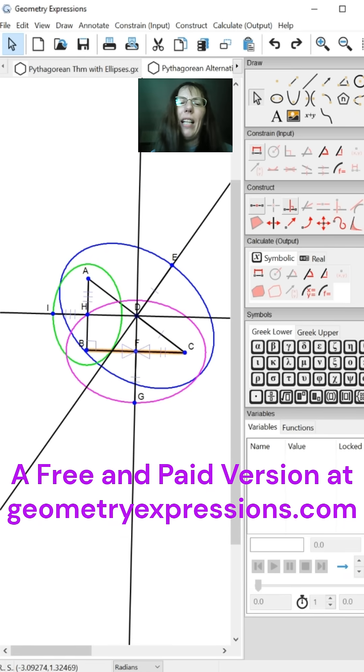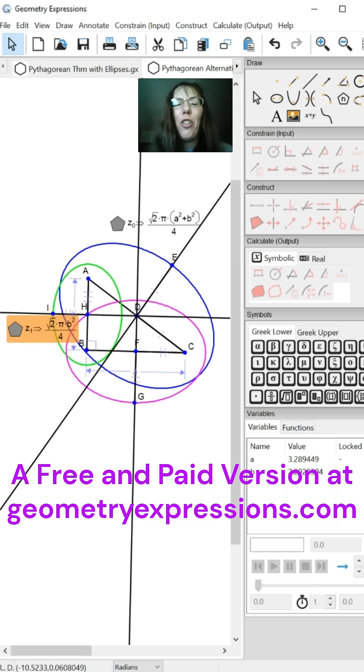We need to label the legs of the triangle A and B. Now I will find the area of each ellipse.